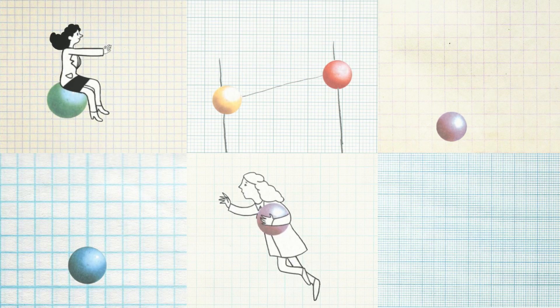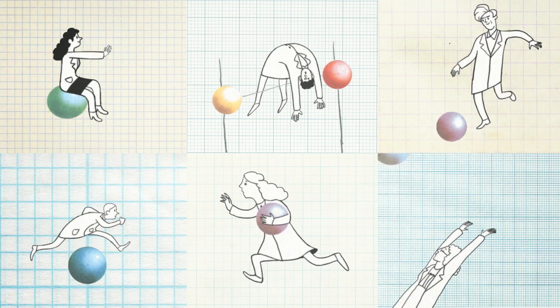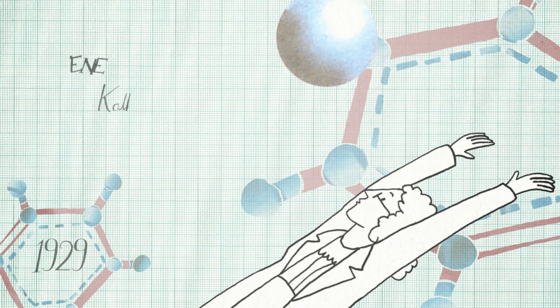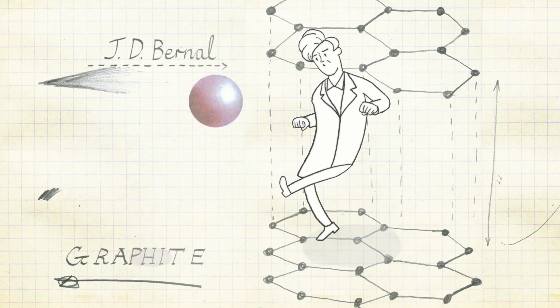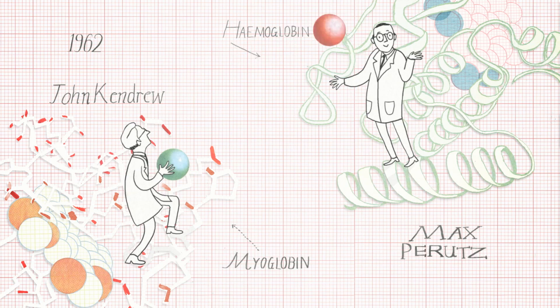Not only that, the Braggs mentored a dream team of crystallographers who went on to work out the structures of a huge range of molecules. From Kathleen Lonsdale, J.D. Bernal and Dorothy Hodgkin, to David Phillips, John Kendrew and Max Perutz. Remember him?